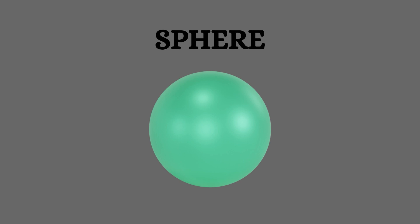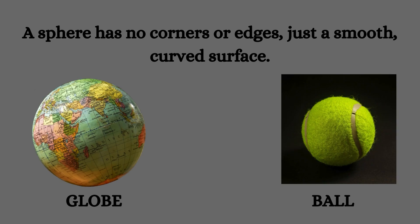Sphere. A sphere has no corners or edges, just a smooth curved surface. Examples include a globe and ball.